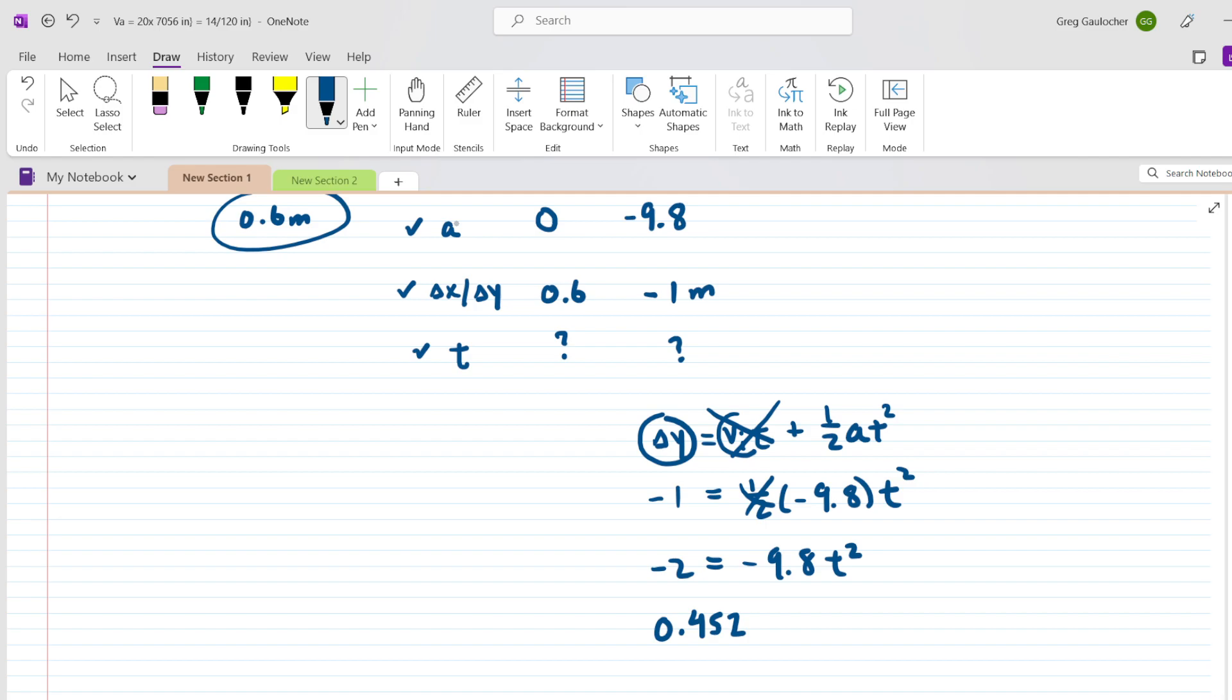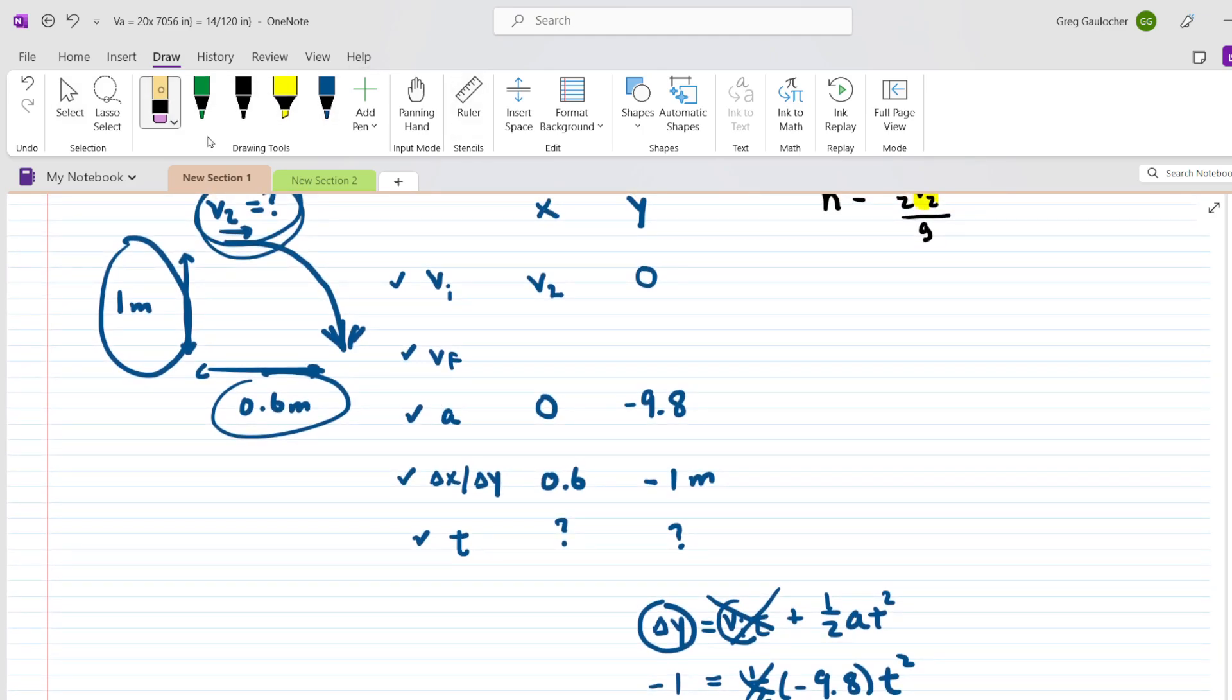Now, the good news about finding the time is that once you have calculated the time in the y direction, you can also fill that in for the x direction because they are the same value. So we will put in 0.452 seconds into our chart.